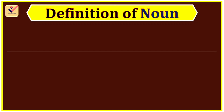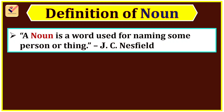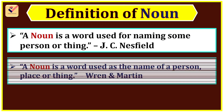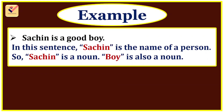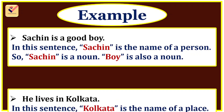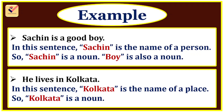Definition of Noun: According to J.C. Nesfield, a noun is a word used for naming some person or thing. According to Ren and Martin, a noun is a word used as the name of a person, place, or thing. For example: 'Shachin is a good boy.' In this sentence, Shachin is the name of a person, so Shachin is a noun. Boy is also a noun. 'He lives in Kolkata.' In this sentence, Kolkata is the name of a place, so Kolkata is a noun.